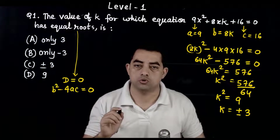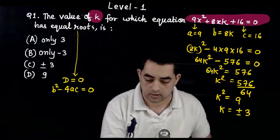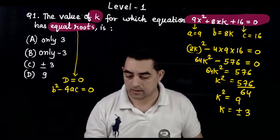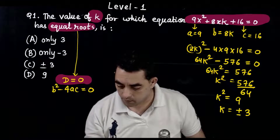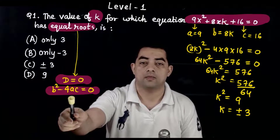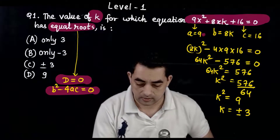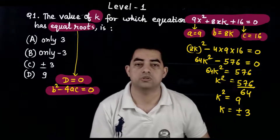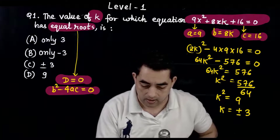Let's see the solution. In this question, the value of k was asked and an equation was given with equal roots. Remember, whenever equal roots are mentioned, it means D should be equal to 0, i.e., b² - 4ac = 0. We need to substitute values, so let's find a, b, c: a = 9, b = 8k, c = 16.